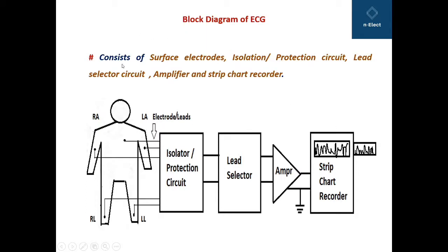The block diagram consists of surface electrodes, which are connected directly to the body, followed by the isolation and protection circuit, then the lead selector circuit, then the amplifier — which we can also call the bioamplifier — and finally the strip chart recorder.